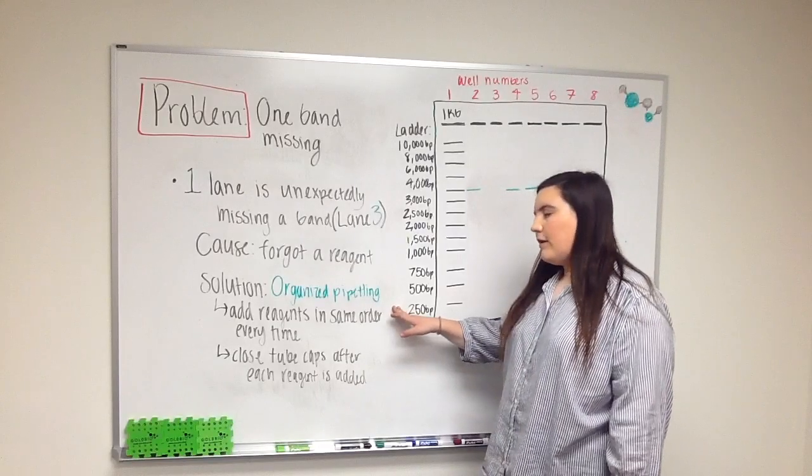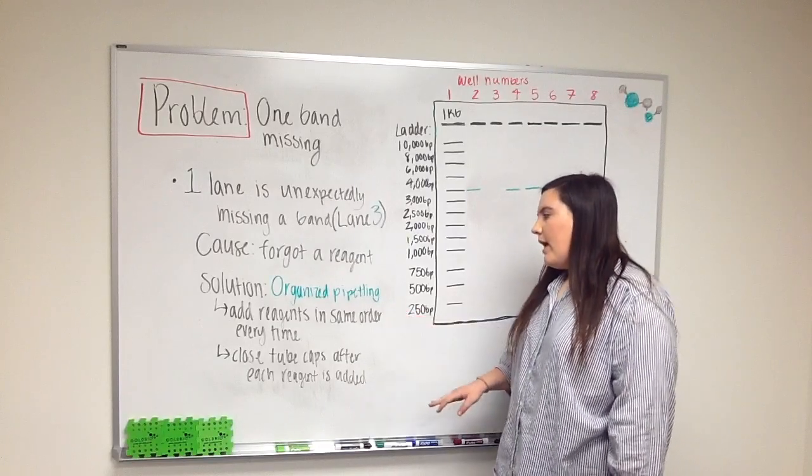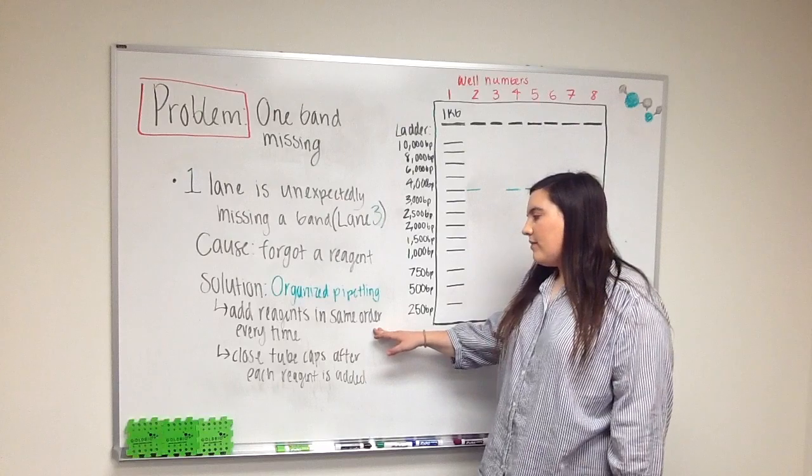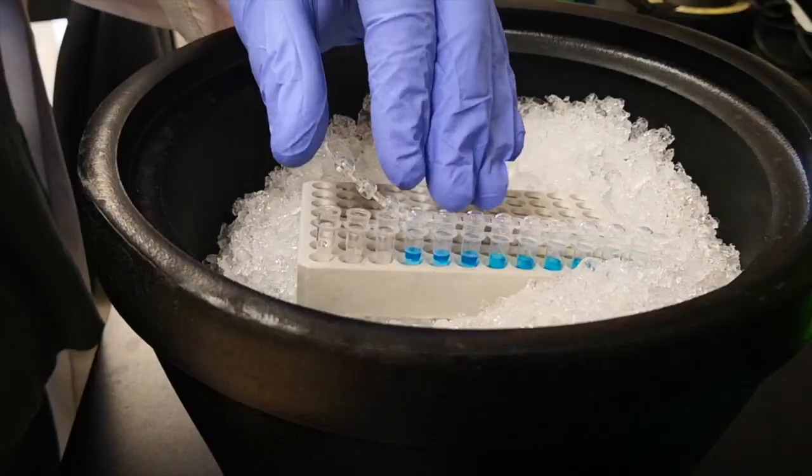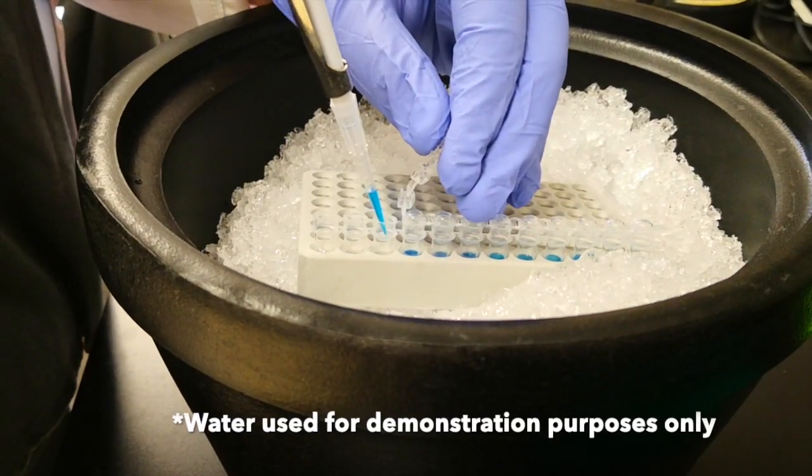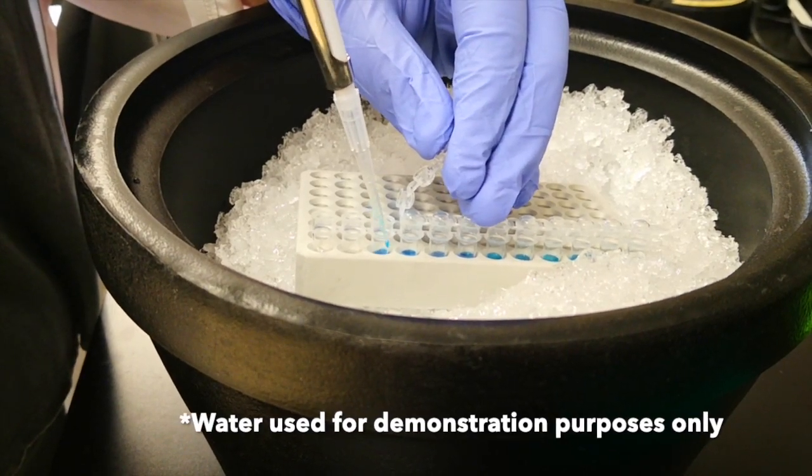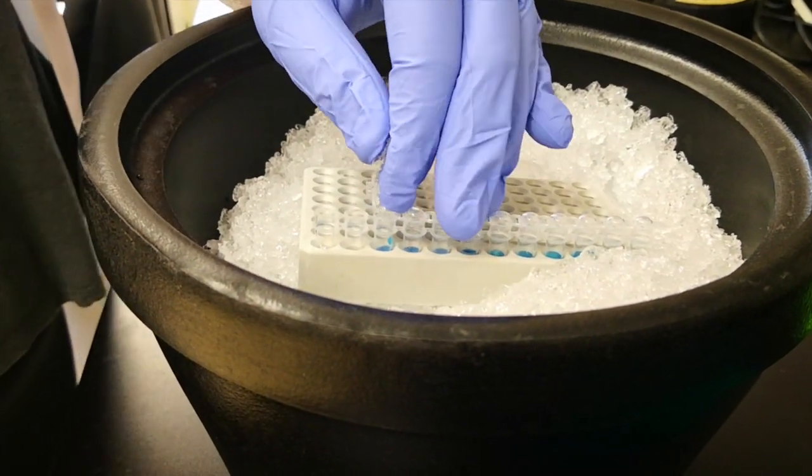A good solution would be to use organized pipetting. Try adding reagents in the same order every single time you do a PCR. Also, be sure to close the tube caps after you add each reagent so that you know that you already pipetted into that tube.